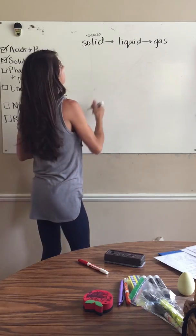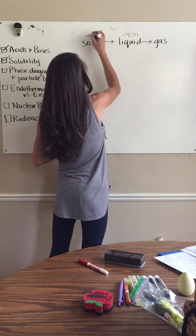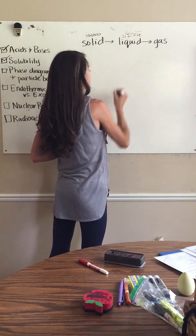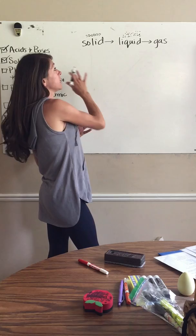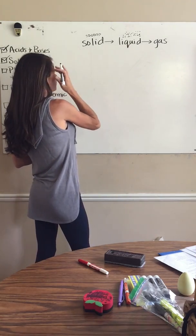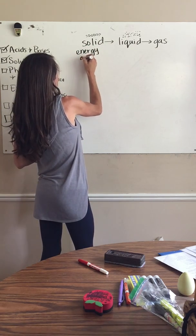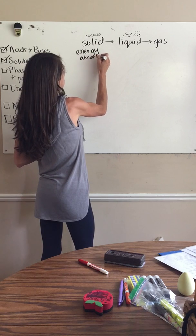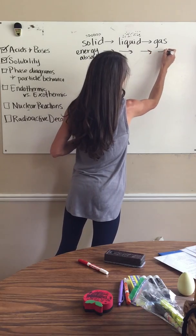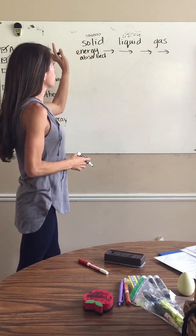As we trend from solid toward gas, that energy begins to increase. That's why when you've got a definite shape with a solid, that shape is not so definite anymore when it's a liquid. The particles are gathering up energy — energy is increasing as we go this way. There is what we call energy being absorbed as we go from solid to liquid to gas.